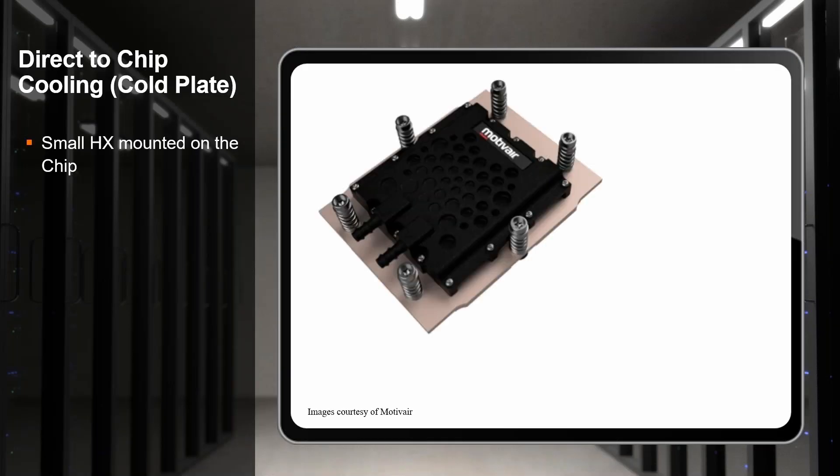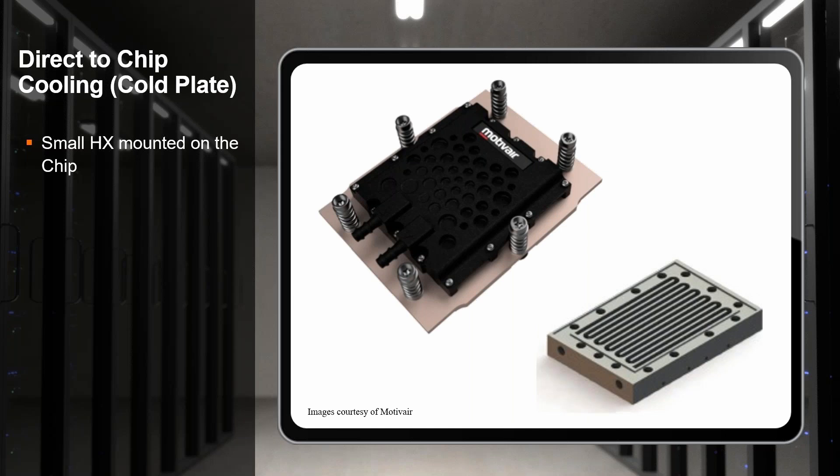What is a cold plate? It's a little heat exchanger — a block of metal with channels milled in it, and we put fluid through there. They're not all that large; if you've never seen one in person, they're a little bit larger than maybe a deck of cards, and they're designed to sit directly on top of the processor chip. A single server may have as many as four cold plates because they sit directly on the processing chips removing heat.